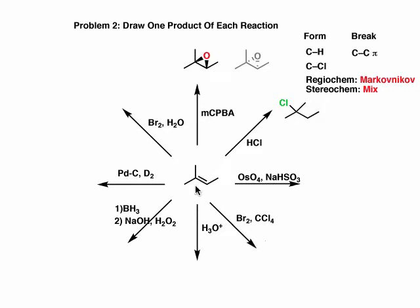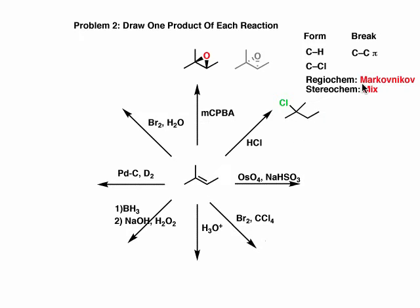Now let's look at the next reaction of this alkene with HCl — hydrochloric acid. This is going to break the carbon-carbon pi bond and we're going to form a new bond between carbon and hydrogen and a bond between carbon and chlorine. The regiochemistry of this reaction is very important. Hydrogen and chlorine are different atoms, and it's important to show that chlorine adds to the most substituted end of the alkene and hydrogen adds to the least substituted end. That's what we refer to as Markovnikov selectivity or regioselectivity.